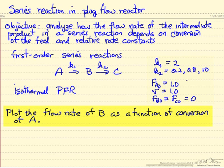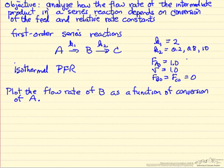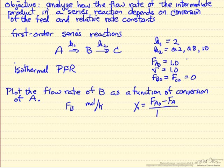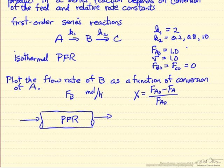We want to look at a plot of how the molar flow rate of B — moles per hour, for example — depends on the conversion of A. The conversion is the flow rate of A coming in minus the flow rate of A leaving the reactor; that's the amount per time reacting over the flow rate coming in.